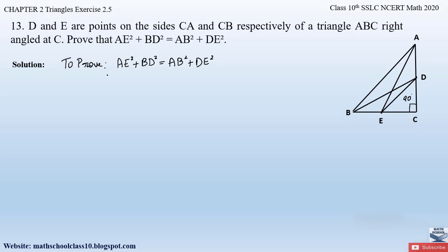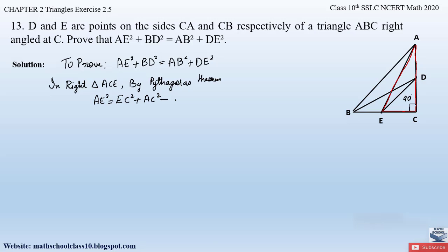To solve this problem, let us take the hint from what we have to prove. Since we have to prove AE² + BD², let us consider the triangle formed by side AE. The right-angle triangle formed by side AE is triangle ACE. In right triangle ACE, by Pythagoras theorem, since AE is the side opposite the right angle, AE is the hypotenuse. So AE² = EC² + AC². Let this be equation 1.